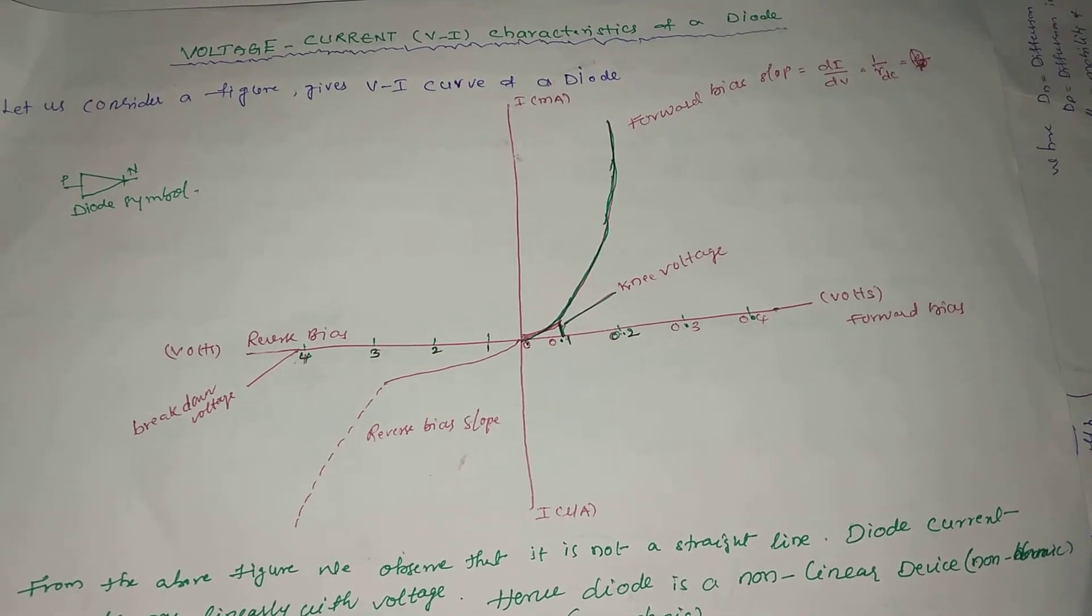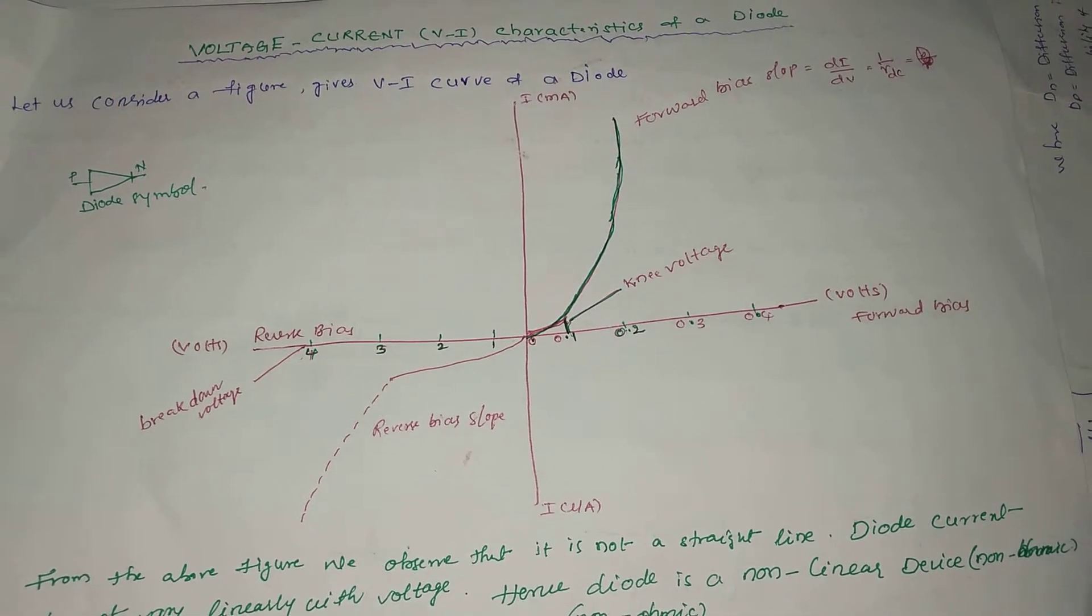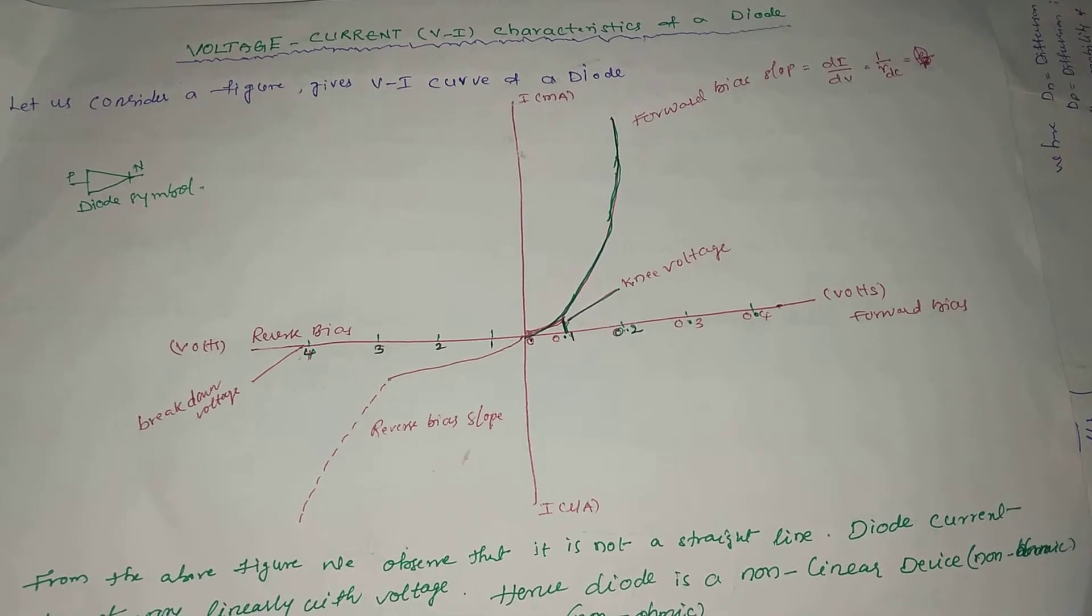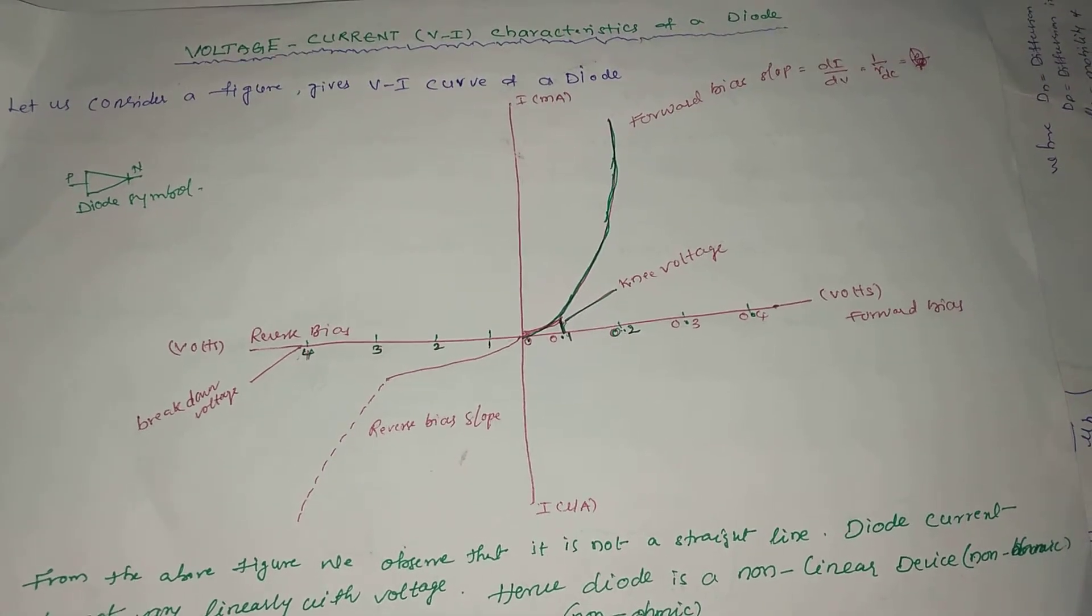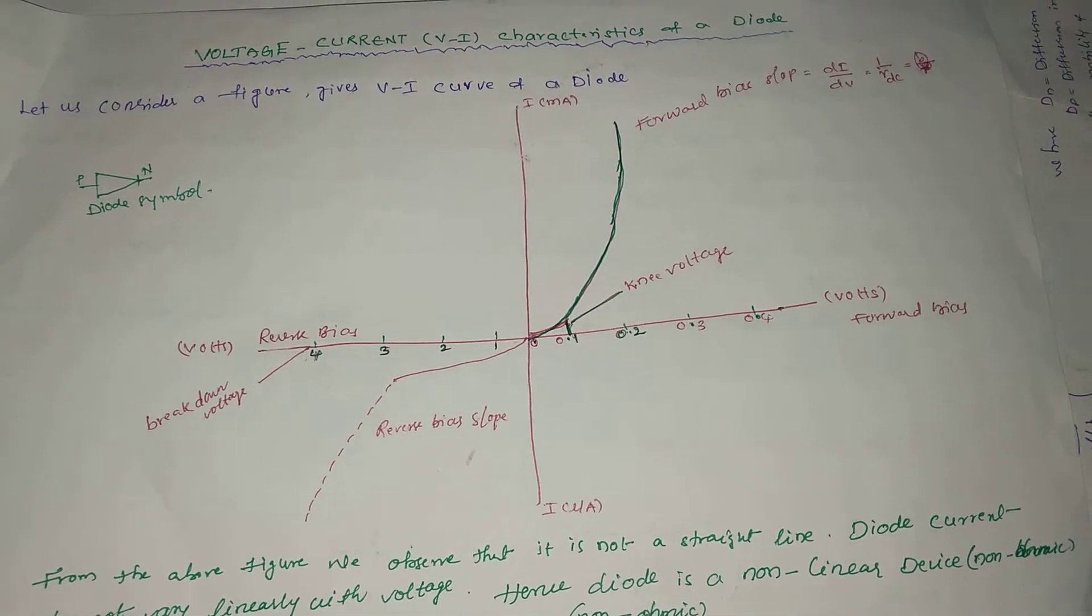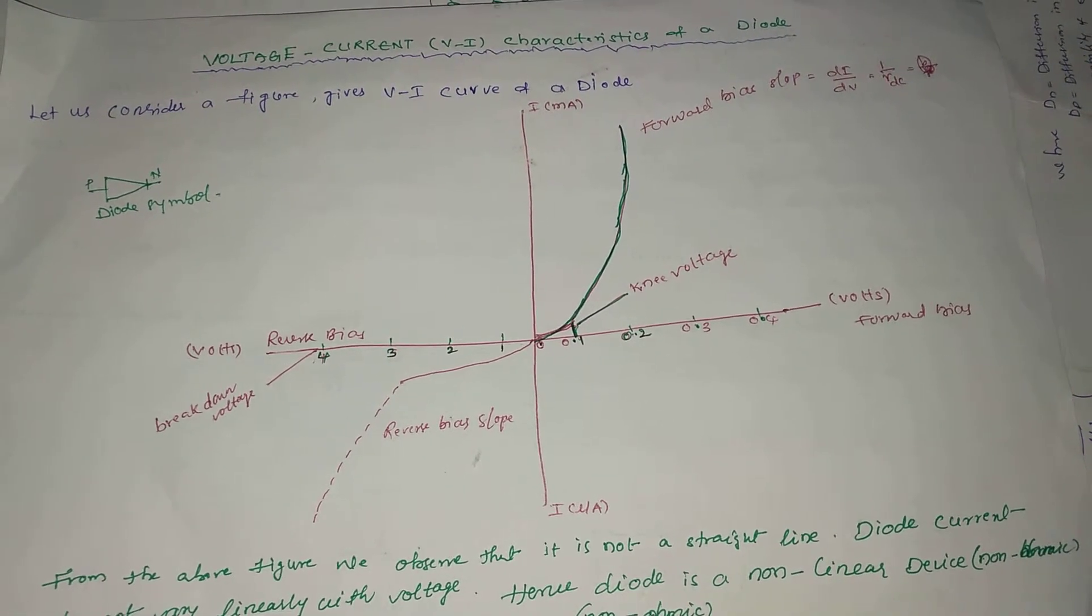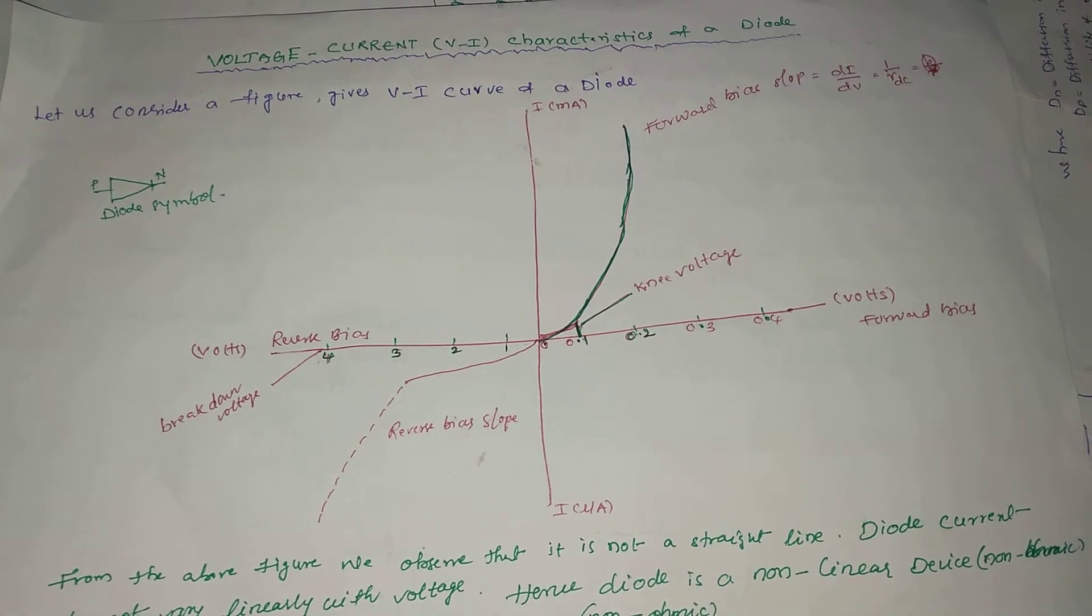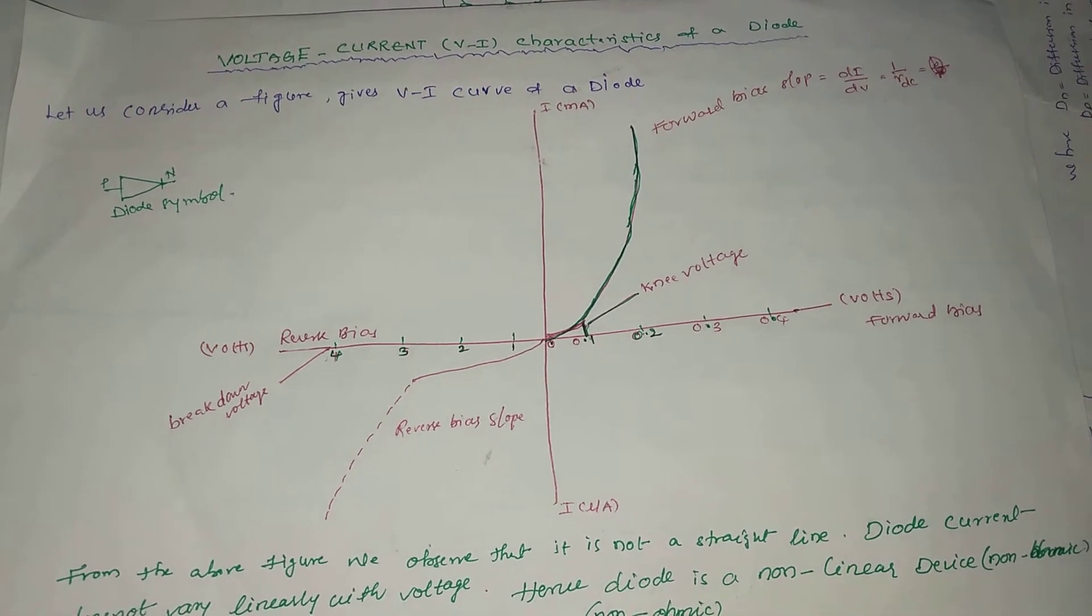Good morning to all, myself Sridhar Gaurud Araldi and today's my topic is voltage current characteristics of a diode. We know that diode is formed by combination of P-type and N-type material.